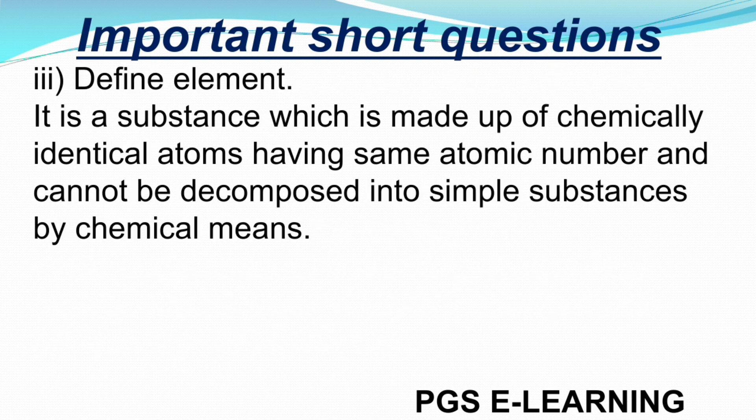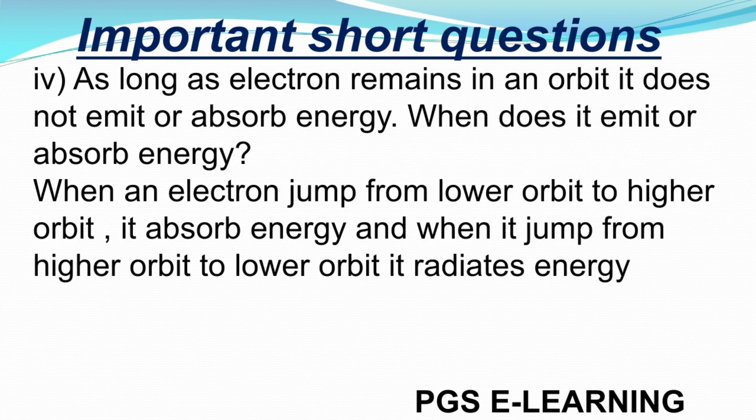Question 3: Define element. It is a substance which is made up of chemically identical atoms having the same atomic number and cannot be decomposed into simple substances by chemical means. Question 4: As long as an electron remains in an orbit, it does not emit or absorb energy. When does it emit or absorb energy? When an electron jumps from a lower orbit to a higher orbit it absorbs energy, and when it jumps from a higher orbit to a lower orbit it radiates energy.